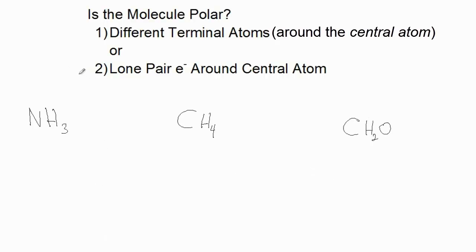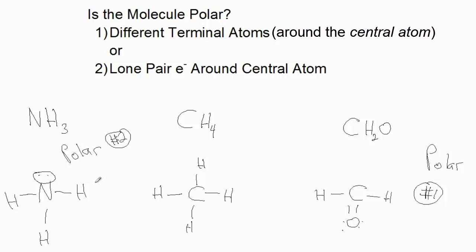Here are three molecules to try: draw the Lewis structure for each and examine the structure for these two criteria. The first one has nitrogen as the central atom with three identical terminal atoms, but there's a lone pair around that central atom. So criteria 2 is met, and this is a polar molecule.